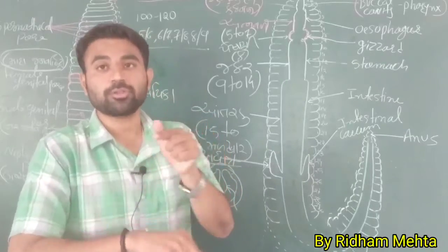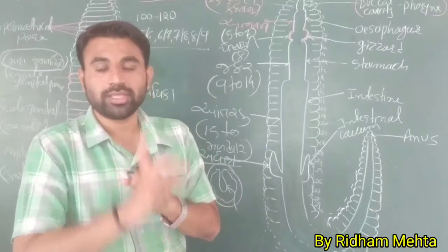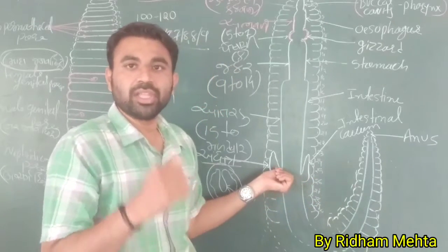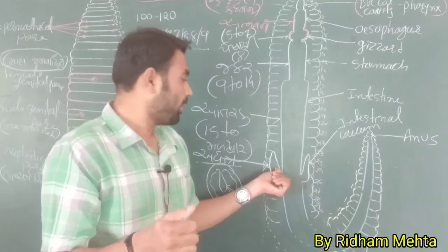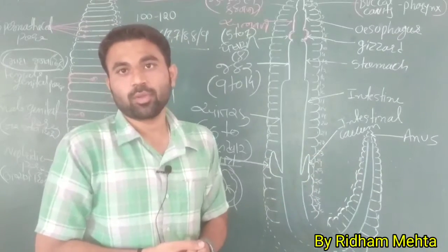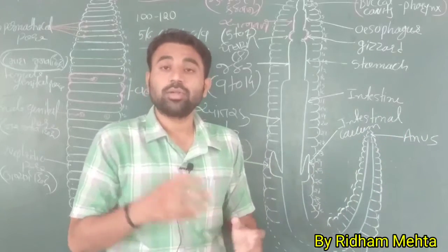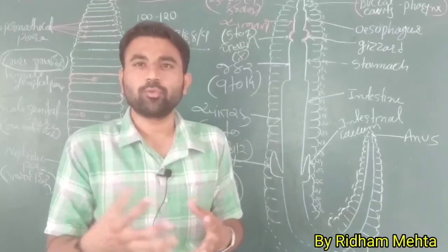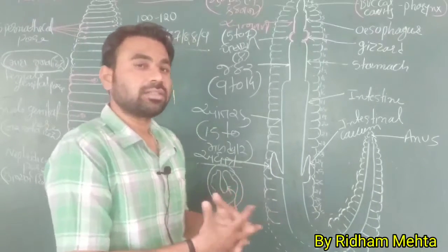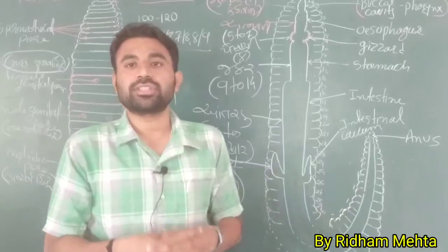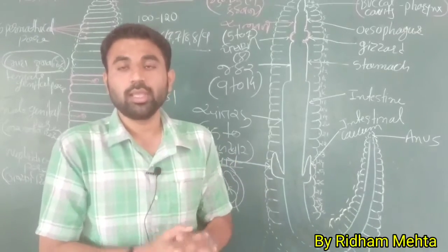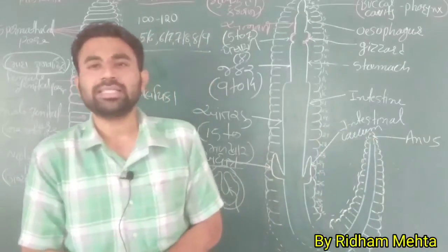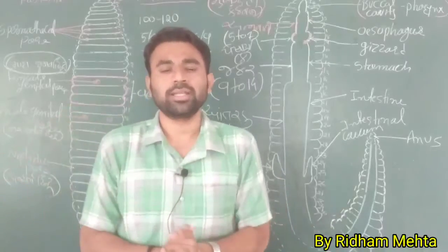In the 26th segment, the intestinal caecum is present. The intestinal caecum secretes digestive enzymes to digest carbohydrates and food materials. Undigested food along with soil exits through the anus.